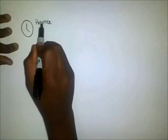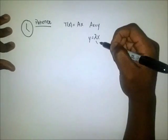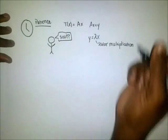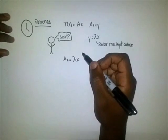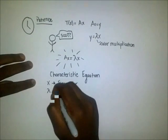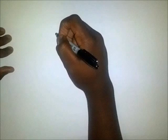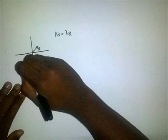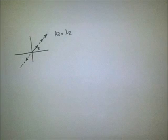So, if Y equals lambda X, where X is the original vector, then you could say the transformation matrix times X equals lambda X, meaning lambda is some scalar. This is called the characteristic equation, where X is the eigenvector and lambda is the eigenvalue.